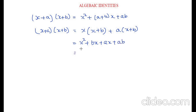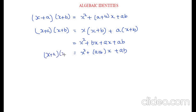Now when you look at this carefully, the middle two terms have a common x. Let me take out that common factor. So x² remains the same, and inside the bracket we have b + a, which I can also write as a + b, plus ab. So here is our derivation: (x + a)(x + b) = x² + (a + b)x + ab.